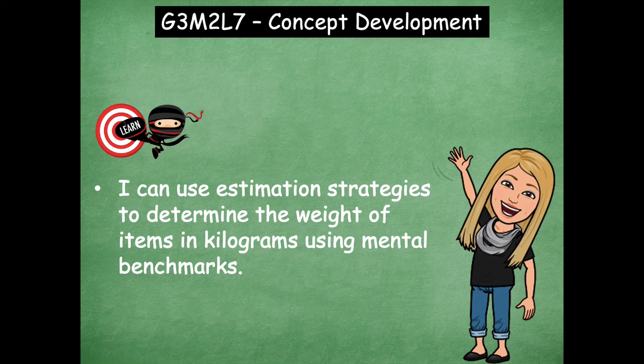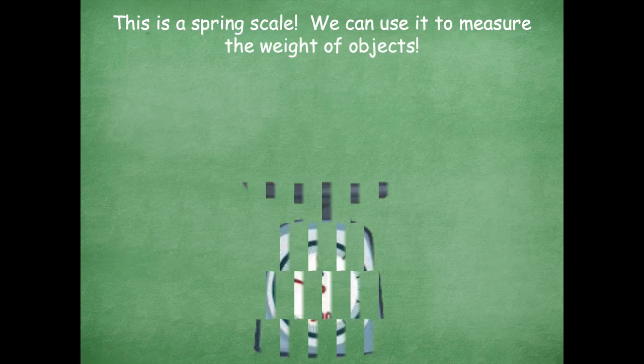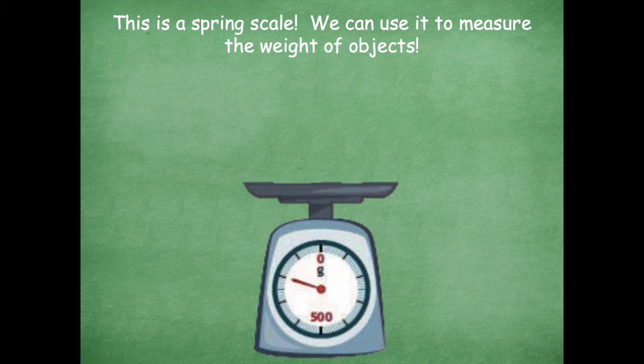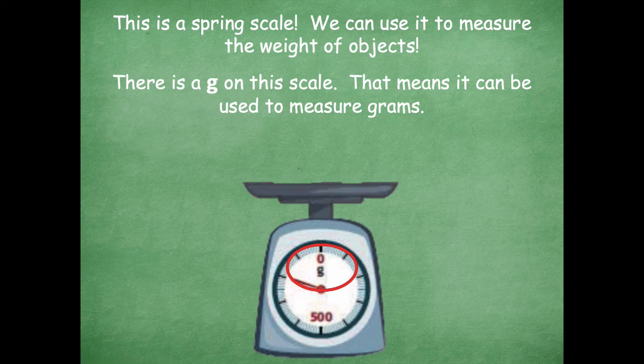For this lesson you don't need any materials, you just have to follow right along with the video. Here is a picture of a spring scale. We can use it to measure the weight of objects — just like that pan balance we talked about previously, this is a different type of scale. The G on this scale means that it can be used to measure grams. So for this one, we're not measuring kilograms because it's labeled with a G.